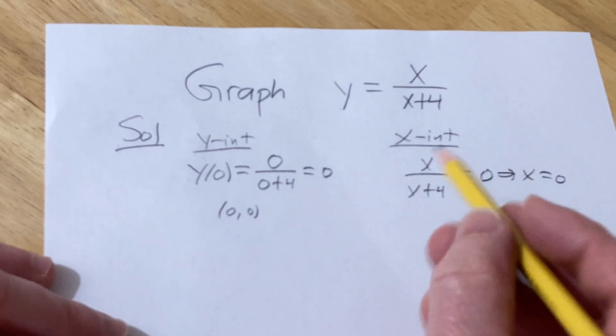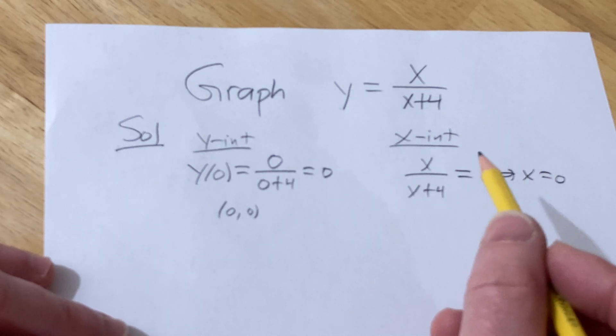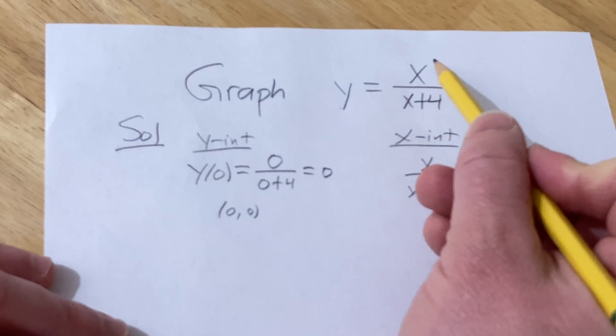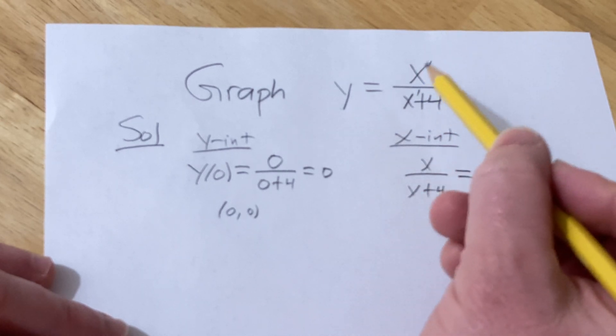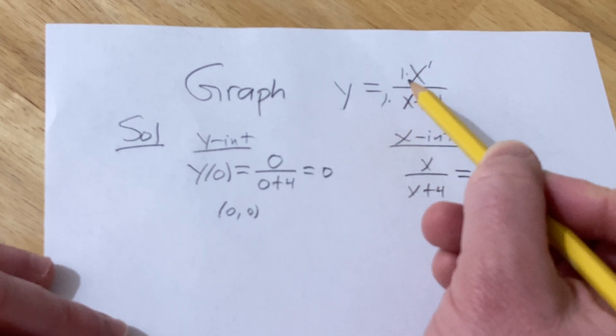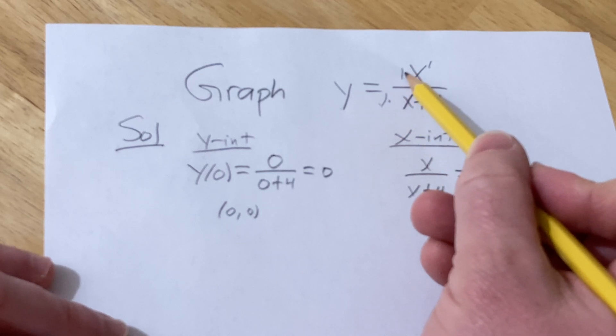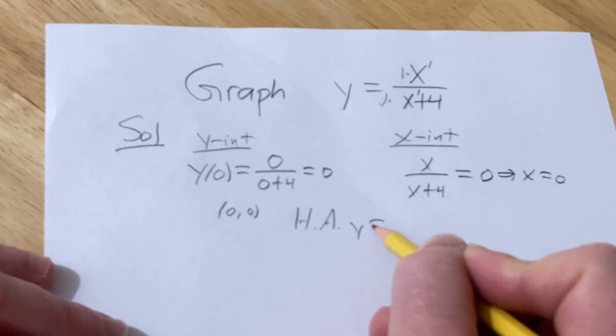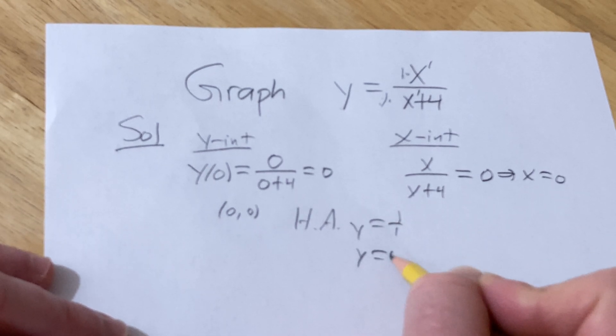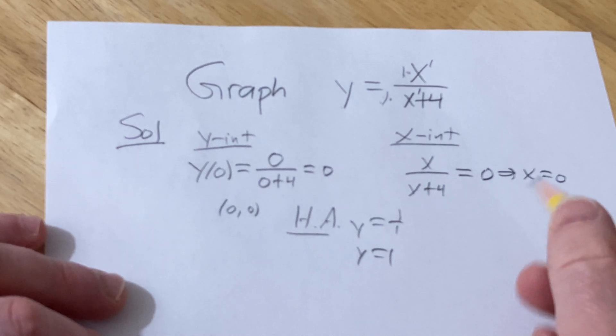Let's find the asymptotes. To find the horizontal asymptote, which we have in this case, we know that because these degrees are the same. You look at the ratio of leading coefficients. There's a 1 here and a 1 here. So the horizontal asymptote is the ratio 1 over 1, which is 1. So the HA is y equals 1 over 1, so it's y equals 1. That's a horizontal asymptote.